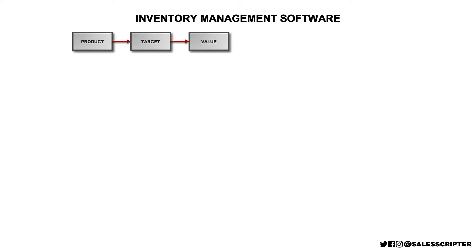The next step in the process is to think about the value that we have to offer. In most cases, I try to keep things simple — I recommend thinking of three to six different improvements that your product can help deliver for the target audience. But since we're talking about how to sell software to businesses, which can be very challenging and very competitive, I'm going to actually make a recommendation to get a little bit more advanced here. So instead of just thinking generally about improvements that you can make, we can divide the improvements that we deliver into three different categories.